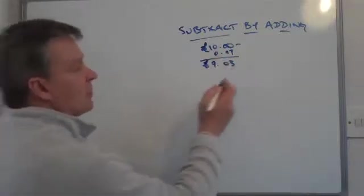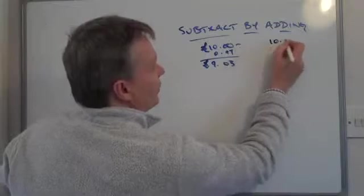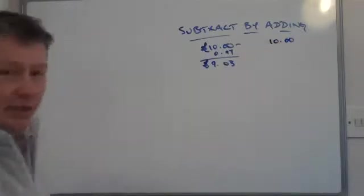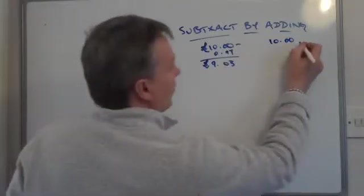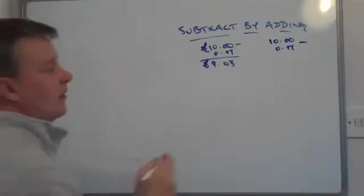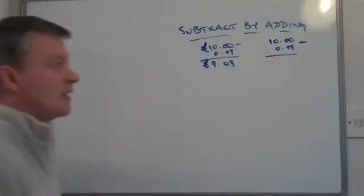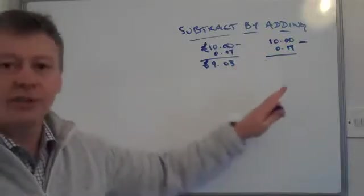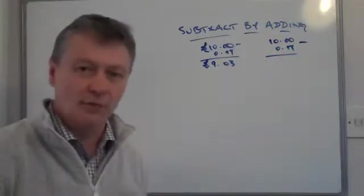So what I'm saying is the same sum is that if you've got 10.00 and you want to take away 0.97, then one of the ways that you can do that is you can add 0.03 to both the top and the bottom.